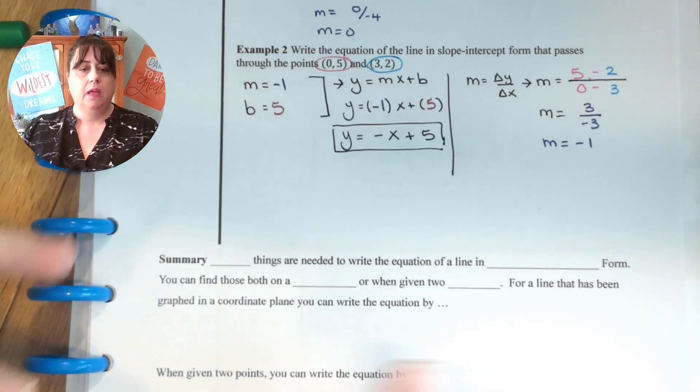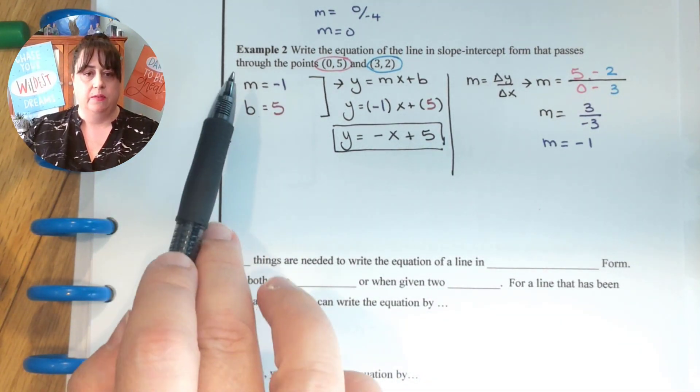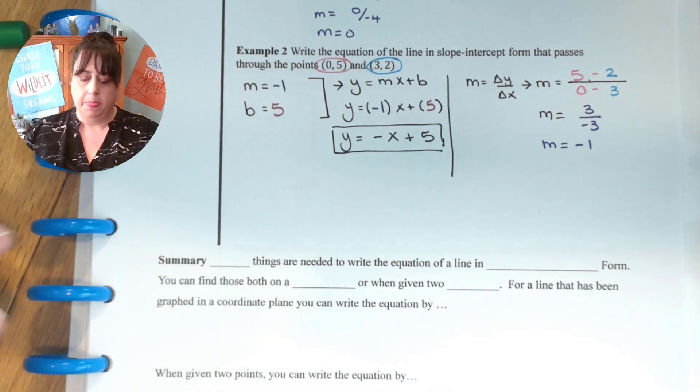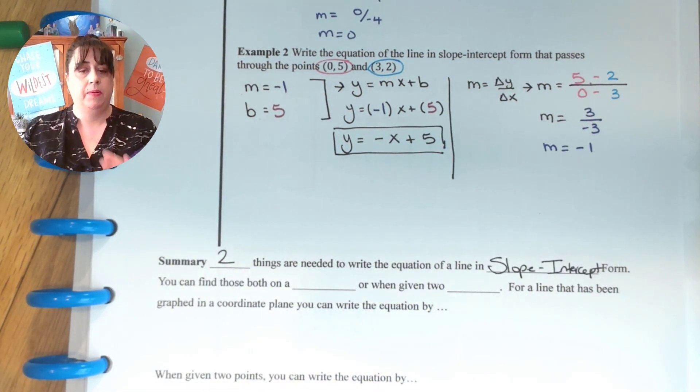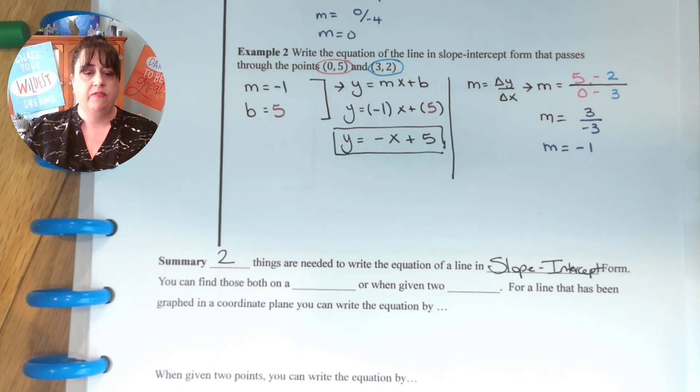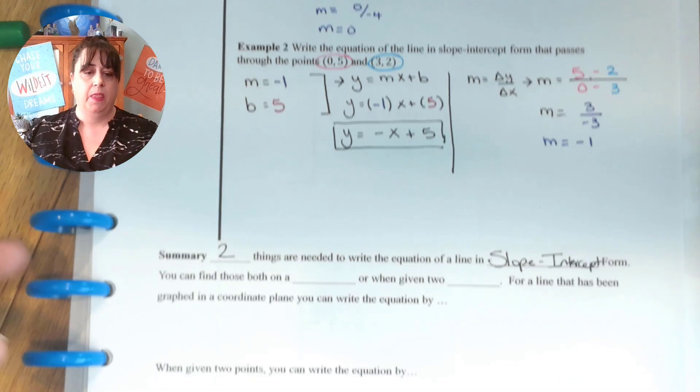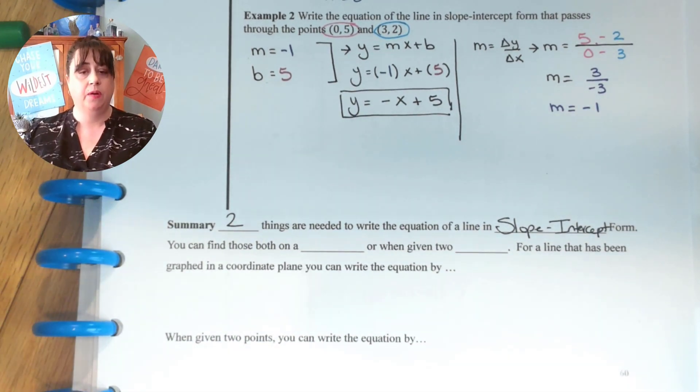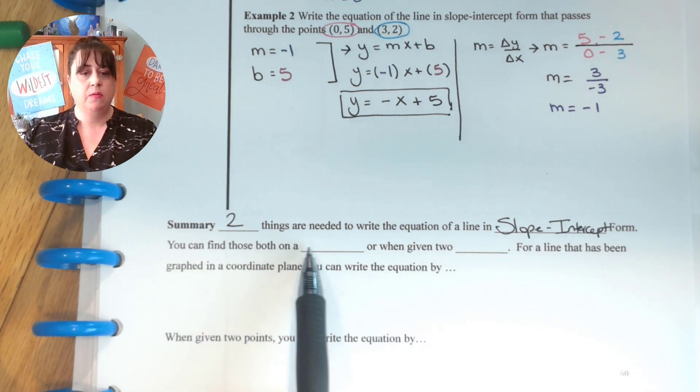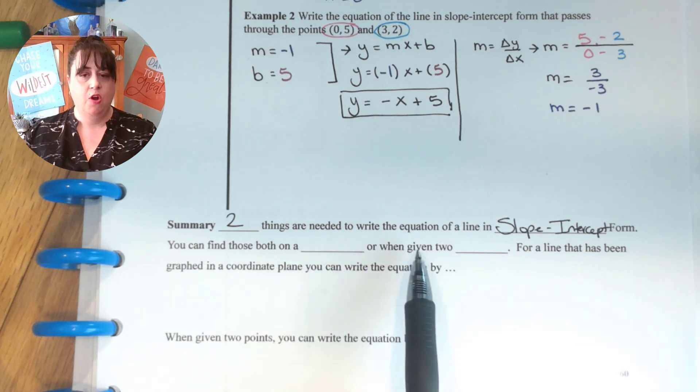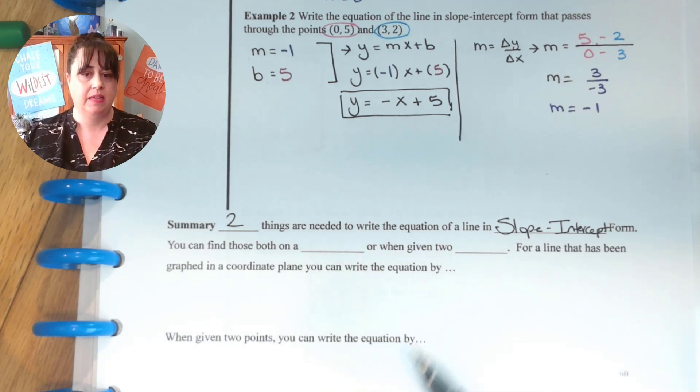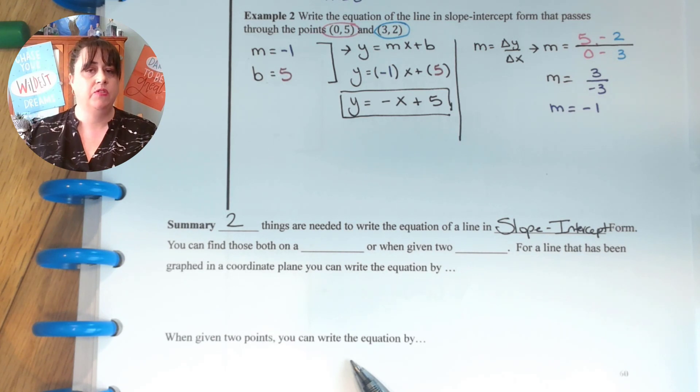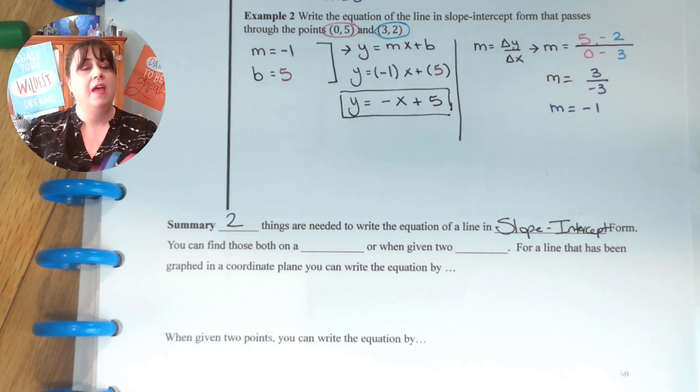That's how you do writing equations in slope intercept form. So let's write our summary today. We need two things. What are the two things we need? We need slope and y intercept. So two things are needed to write an equation in slope intercept form. You can find those both on a coordinate plane or when given two points. What I want you to do tonight is I want you to write down how we did this. How did we do it on a coordinate plane and how did we do it given two points? Thank you so much for showing up and remember be nice to each other because we all need some extra kindness in our lives. Bye for now.